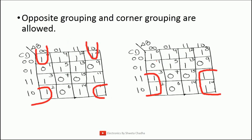The next important point: opposite groups and corner grouping is also allowed. All 4 corners can form a group. Similarly, opposite groupings are allowed — you can think of the K-map like a 3-dimensional figure, like a ball, where all corners are connected with each other. So we can make a group of 4 in this direction as well. Opposite groupings are possible and we need to go for the larger group size as discussed in the previous point.